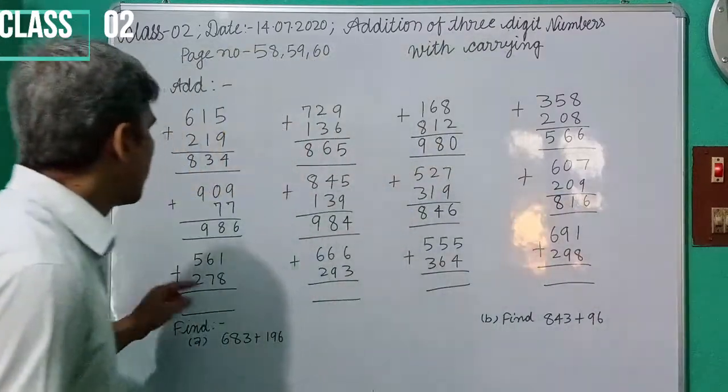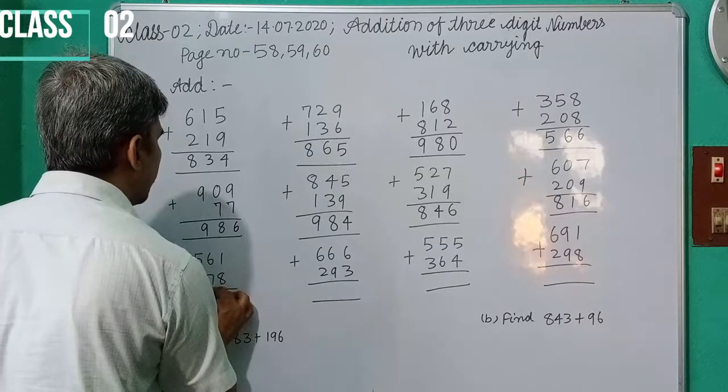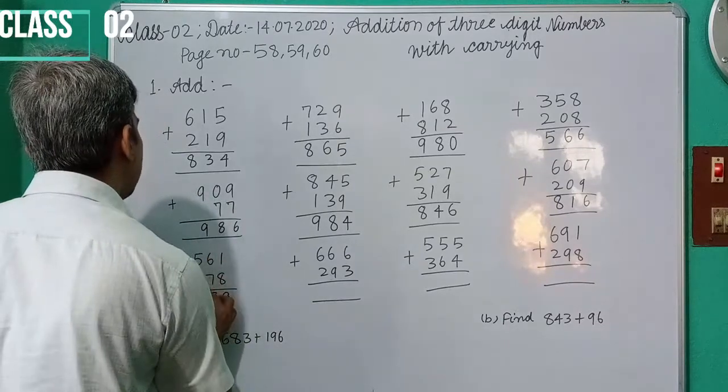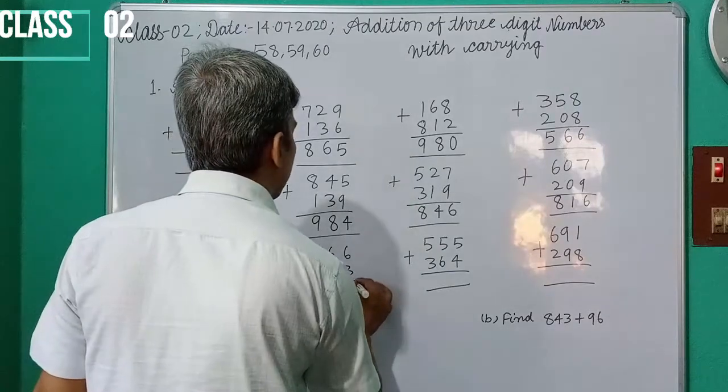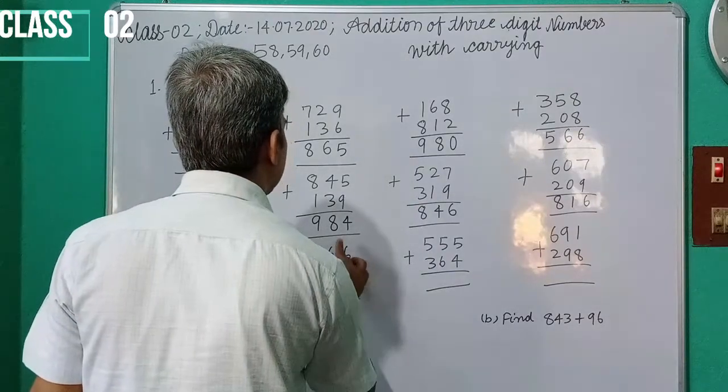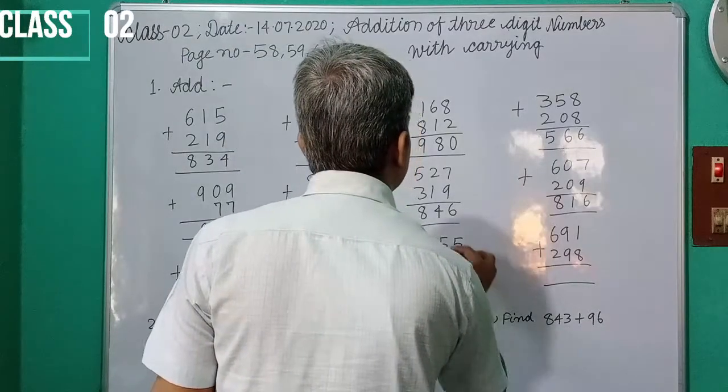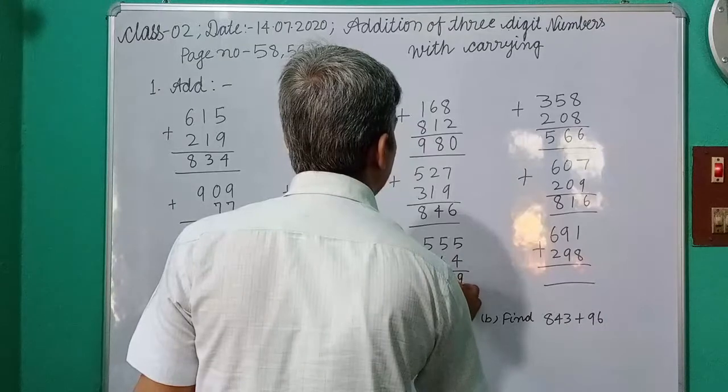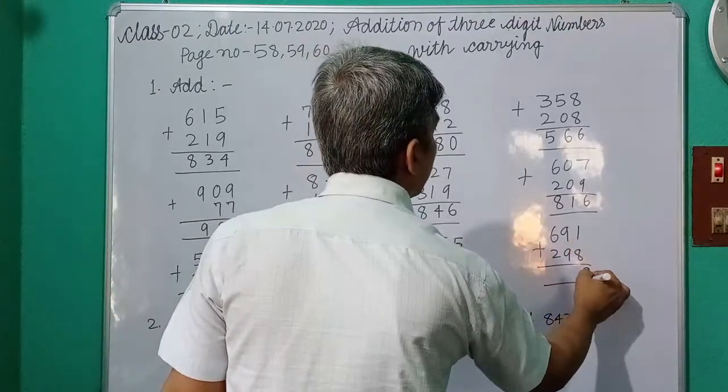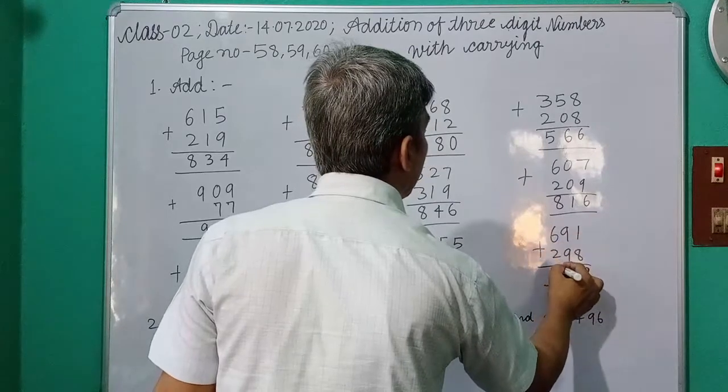Now 358 plus 208 equals 566. 7 plus 6 equals 13, write 3, carry 1. 5, 2, 7, carry 1, equals 8. Next, 667 plus 204 equals 871. Then 641 plus 219. Continue with more problems involving carrying.